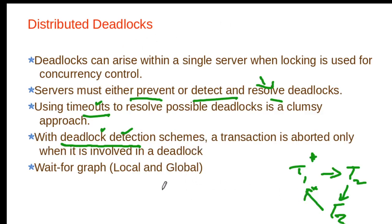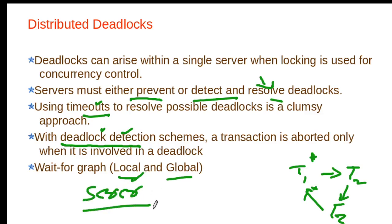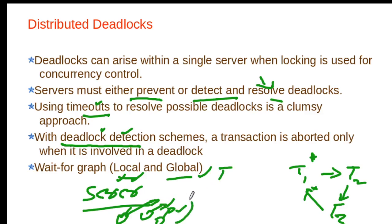If a cycle is found in the wait-for graph, we must abort one of the transactions in the cycle. In the case of distributed deadlocks, there are two kinds of wait-for graphs: local and global. For each server, there is a local wait-for graph where the server tracks its own objects and which transactions are accessing them.